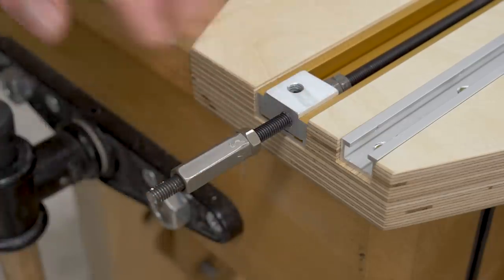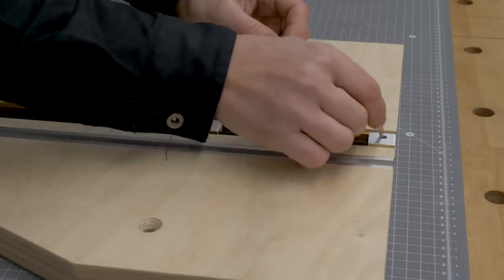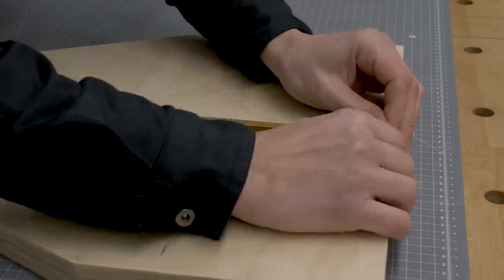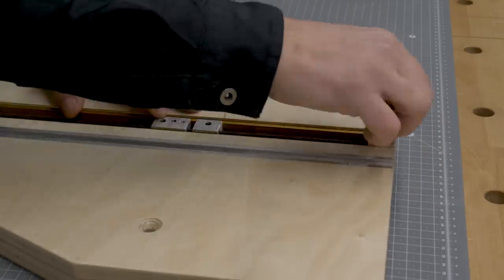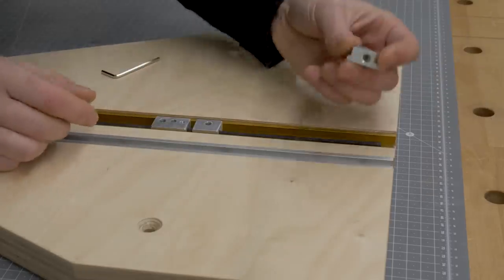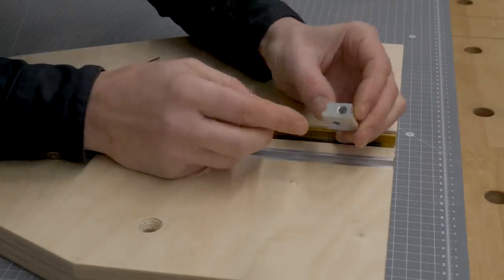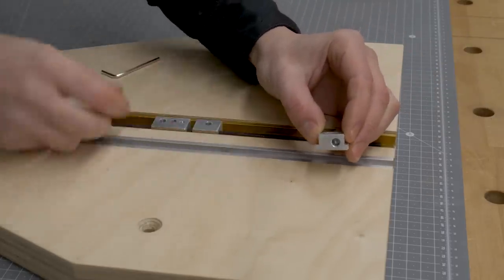I'm going to disassemble the mechanism so that you can better see how it works. By loosening some headless bolts I can remove the T-slot nuts. This piece allows me to turn the threaded rod without it coming loose.